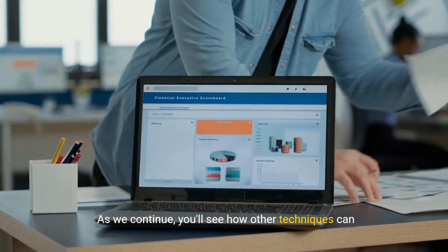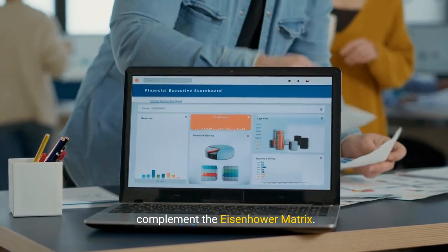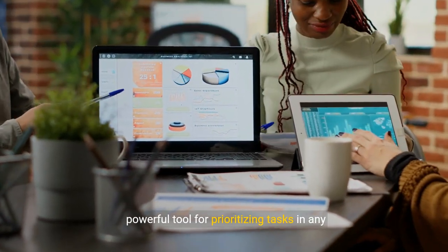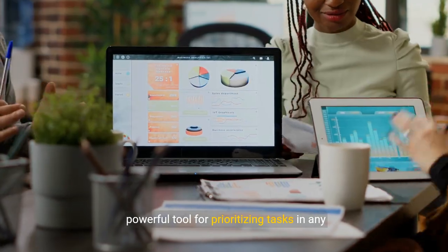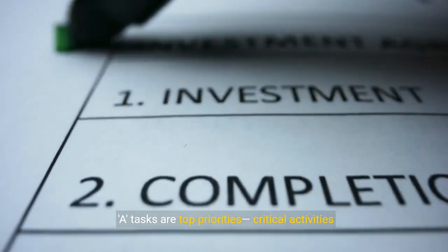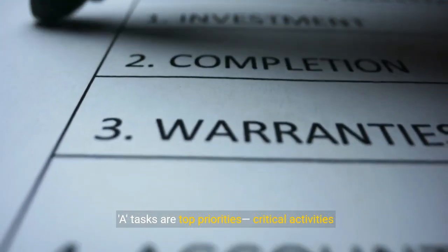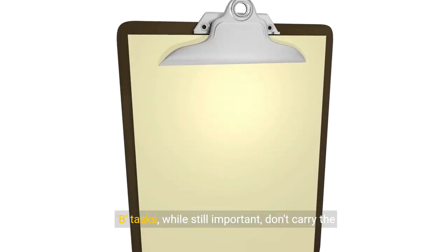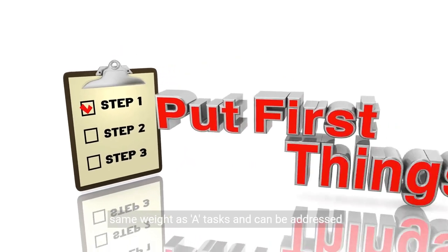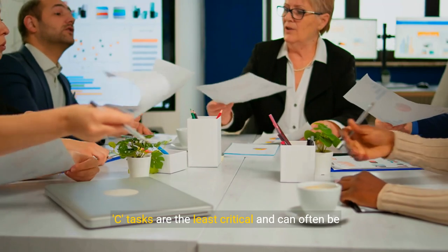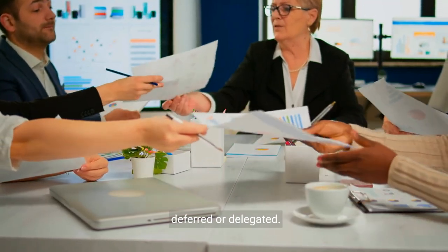Welcome to our deep dive into ABC analysis, a powerful tool for prioritizing tasks in any business setting. ABC analysis categorizes tasks into three groups: A, B, and C. A tasks are top priorities, critical activities that significantly impact your goals and must be addressed promptly. B tasks, while still important, don't carry the same weight as A tasks and can be addressed following the A tasks. C tasks are the least critical and can often be deferred or delegated.